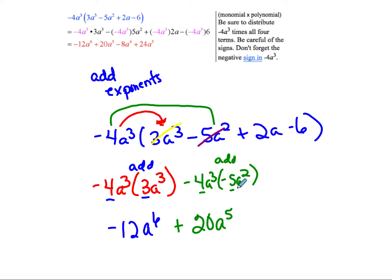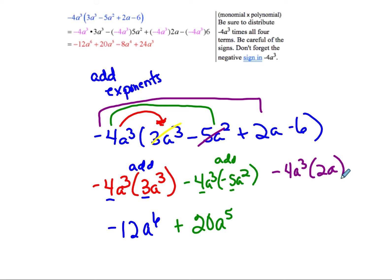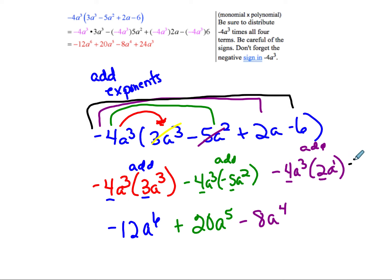Then we multiply negative 4a to the 3rd times 2a. Negative 4 times 2 is negative 8, and a to the 3rd times a to the 1st — add exponents — gives a to the 4th, so negative 8a to the 4th. Finally, negative 4a to the 3rd times negative 6: negative 6 times negative 4 is positive 24, and there's no other a, so that's 24a to the 3rd.